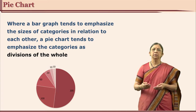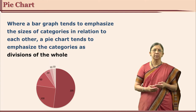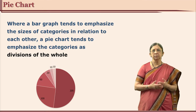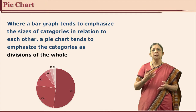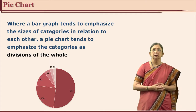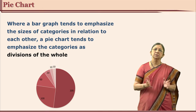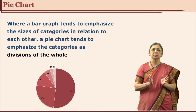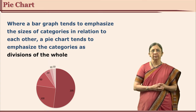Let us see one more type of graph which is called pie chart or pie graph. This also represents your full data distribution, but it assumes a circular arrangement — the representation is circular and you are showing a part of the circle as your data.